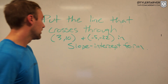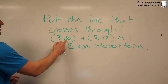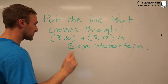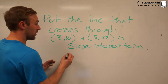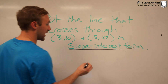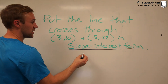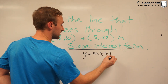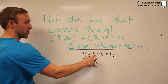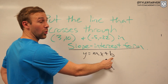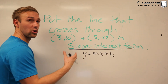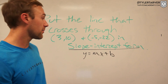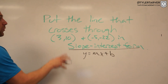You've worked the problem and you've got your answer — let's see if we have the same answer. We want to put the line that goes through these two coordinates in slope-intercept form. Slope-intercept form is y equals mx plus b, where m is your slope, b is your y-intercept, and x and y are coordinates on that line.